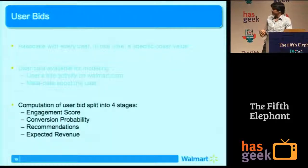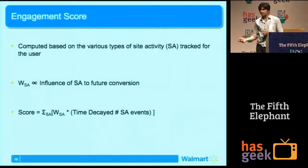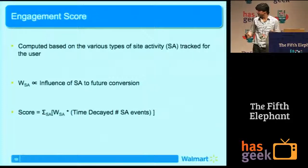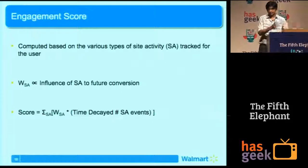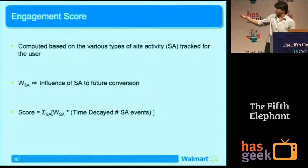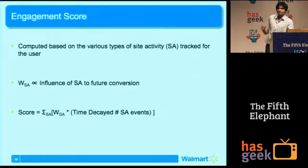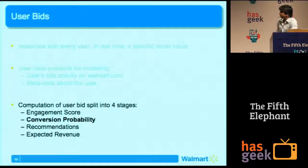How do we build our user bids? This is done in four stages. First, we compute an engagement score — a measure of how engaged the user is on the website, how much he uses Walmart.com, which converts into how likely he is to convert. For each type of site activity (item pages, add to carts, etc.), we take historical data and measure: if a person does so many item page views, how likely is he to convert? We compute a weight for every type of site activity, multiply by the count of that activity, and sum over all types. This gives a single value per user, essentially ranking our users. We use this ranking to compute the conversion probability.